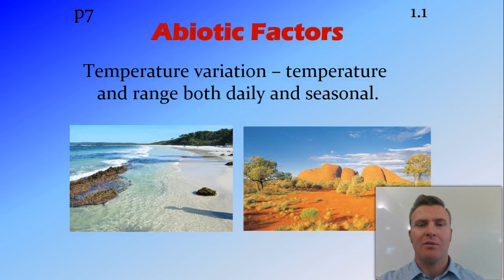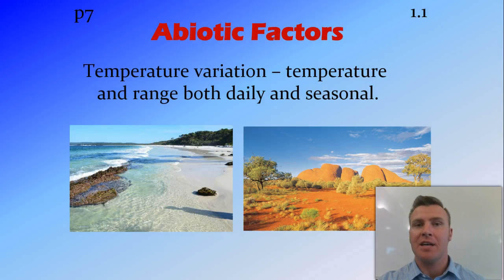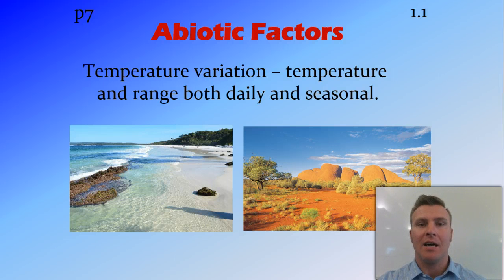Temperature variation refers to the variation in temperature in both a daily and seasonal range. Water has a much smaller range, particularly a smaller daily range — the temperature of the water in the morning, afternoon, or middle of the night is quite similar. There is seasonal variation, but the daily variation is small. On land it's very different; in the desert it can be very hot during the day but very cold at night, giving a large daily fluctuation, plus seasonal fluctuations on top of that.